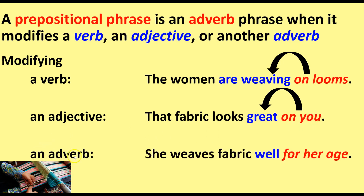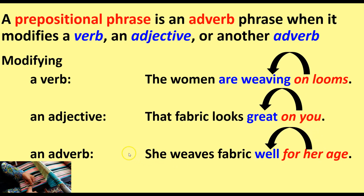Modifying an adverb: 'She weaves fabric well for her age.' For her age is our prepositional phrase. Weaves is the verb, and well is an adverb telling us how she weaves. For her age tells us to what extent it's well — it's well for her age — qualifying well for us. So it's modifying an adverb. All three of these prepositional phrases are considered to be acting as adverbs in the sentence.